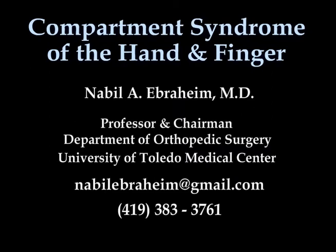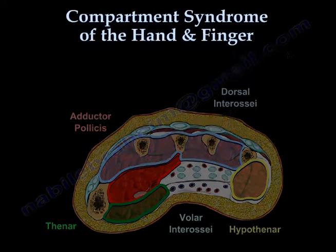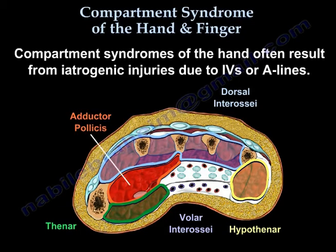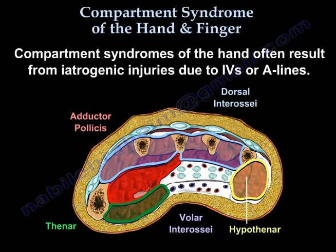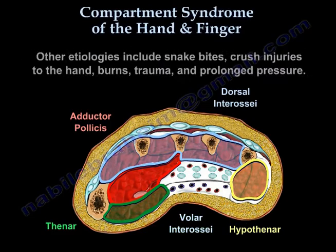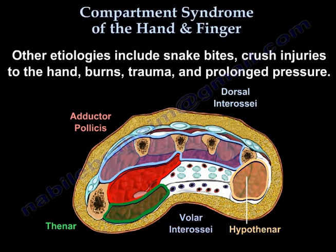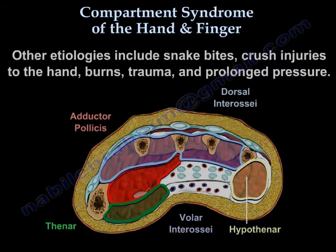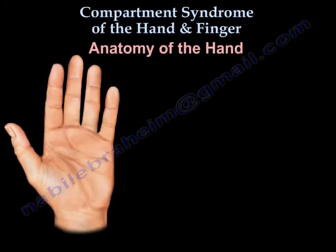Compartment syndrome of the hand and finger. Compartment syndromes of the hand often result from iatrogenic injuries due to IVs or A-lines. Other etiologies include snake bites, crush injuries to the hand, burns, trauma, and prolonged pressure.